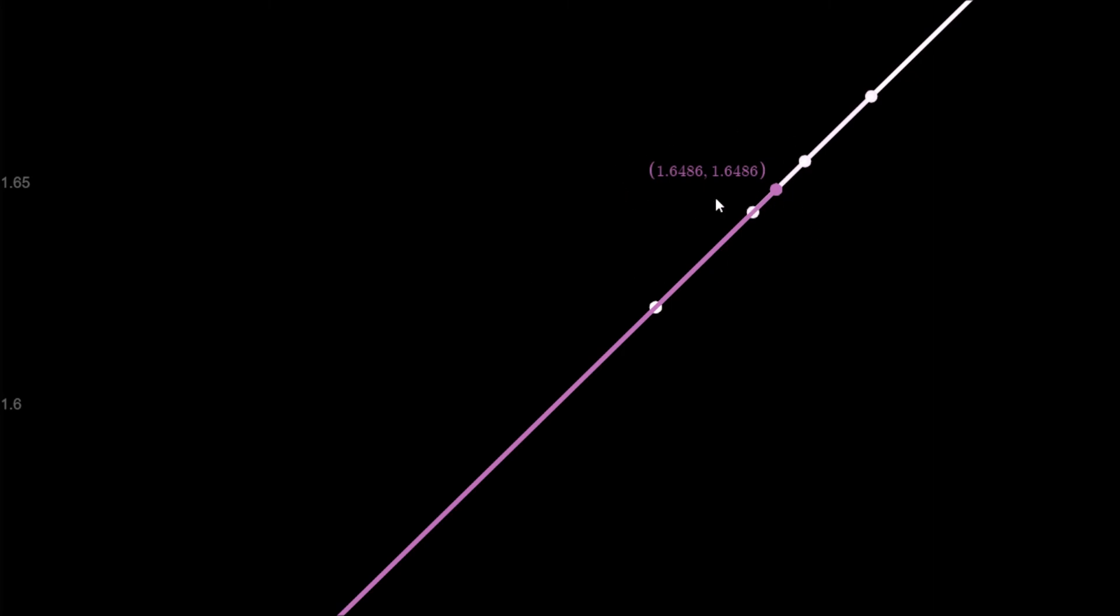The final value we end up with is 1.6486 for both x and y. This is the value e^0.5, or an approximation to it. The actual value is 1.6487, so we're very close.